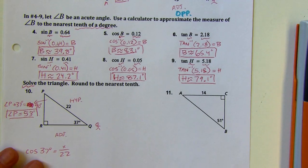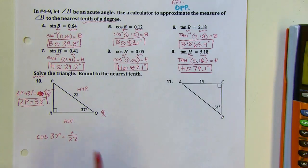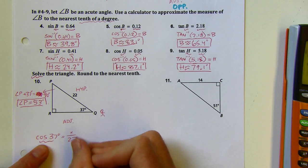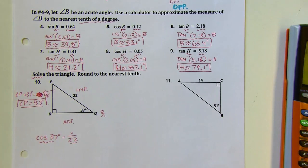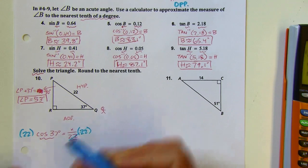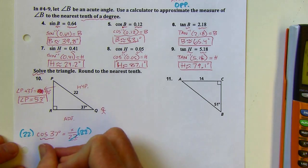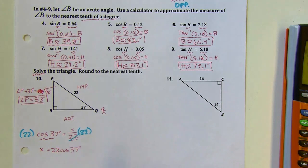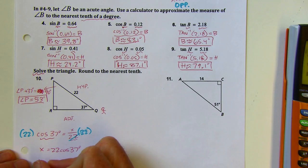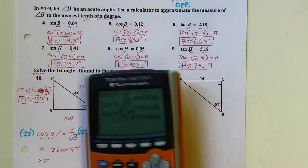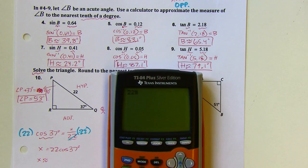I can solve for x. I'm not going to use the incredible switch because I'd still have the variable on top. Instead, I'm going to multiply both sides by 22 to isolate x. This says to the nearest tenth, so: 22 times the cosine of 37 degrees is about 17.6.